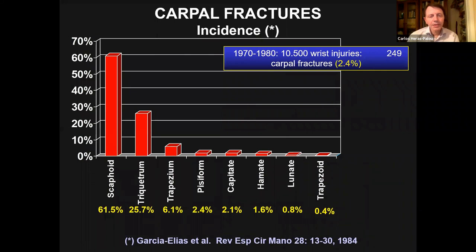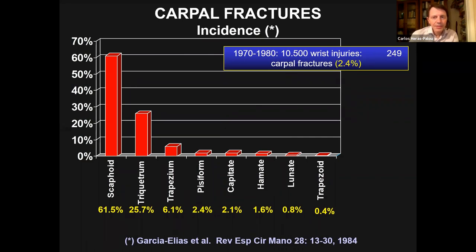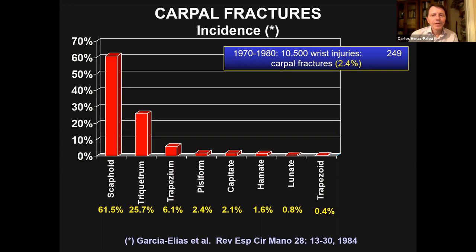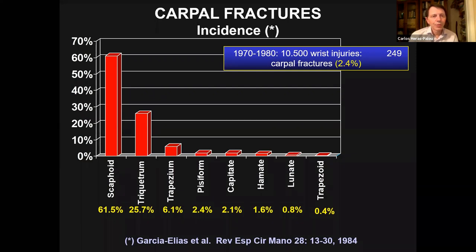This is some work by Marc Garcia-Elias. He has published several studies on the incidence of carpal fractures. Out of over 10,000 wrist injuries, 2.4% were carpal fractures — so they are uncommon, but I wouldn't say they are as rare as people think. Out of the carpal fractures, two-thirds are of the scaphoid. The next in frequency is the triquitum, but that's because of the little dorsal chip fractures.